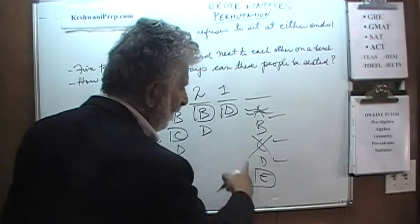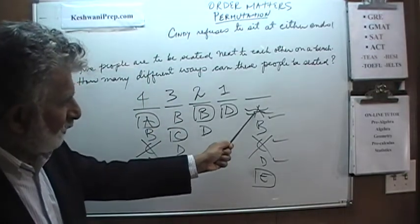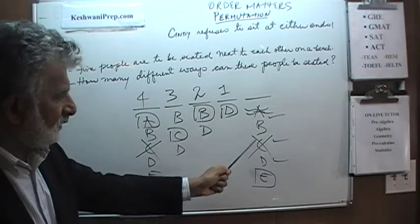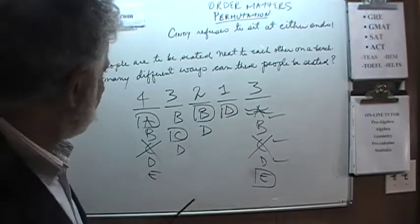And there were how many different ways here? Here we had three different ways. We had already put Mr. A over here and Cindy does not want to sit at the end. We had three different choices here. I forgot to write that earlier.